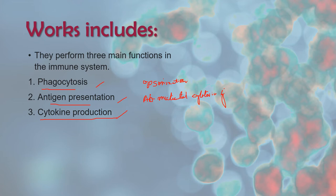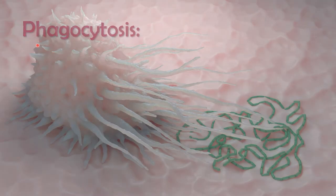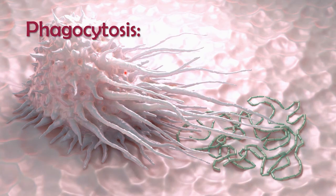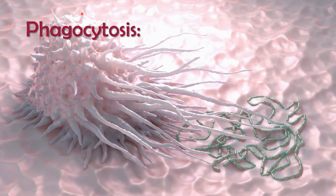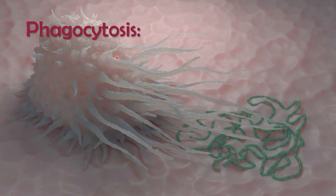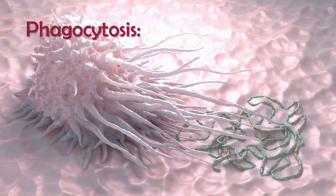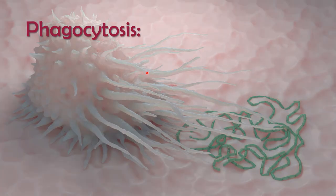Monocytes are not involved in antigen presentation — macrophages are independent of other immune cells for presenting antigens to helper T cells, whereas monocytes do not perform any kind of antigen presentation and are not considered antigen-presenting cells. As mentioned, macrophages have amoeboid-like structures — the pseudopods.